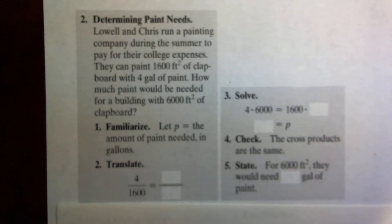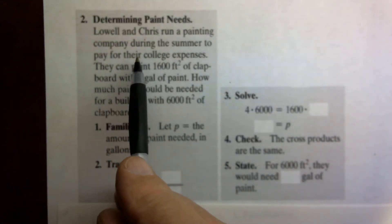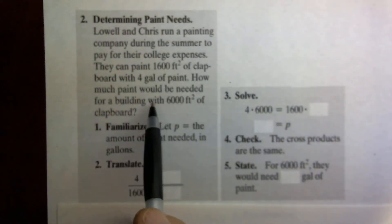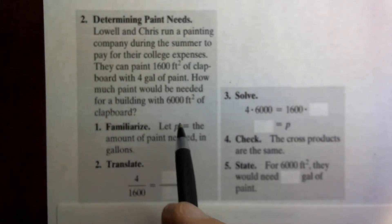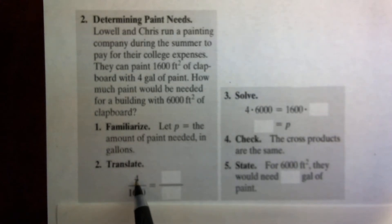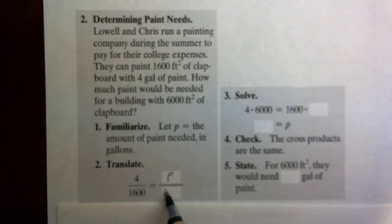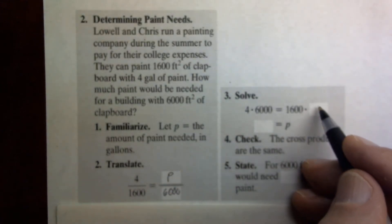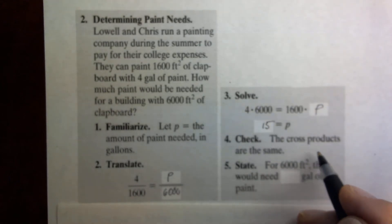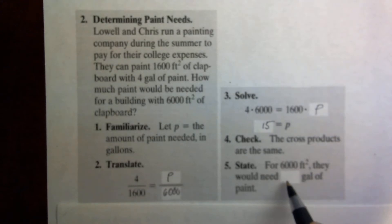The next exercise is a guided solution about determining paint needs. Lowell and Chris run a painting company and can paint 1,600 square feet of clapboard with 4 gallons of paint. How much paint would be needed for 6,000 square feet? Let P be the amount of paint in gallons needed for 6,000 square feet. We translate this into a proportion: 4 gallons to 1,600 square feet equals P gallons to 6,000 square feet. Solving by cross-multiplying: 4 times 6,000 equals 1,600 times P. Dividing both sides by 1,600, P equals 15. The cross-products check, and they would need 15 gallons of paint.